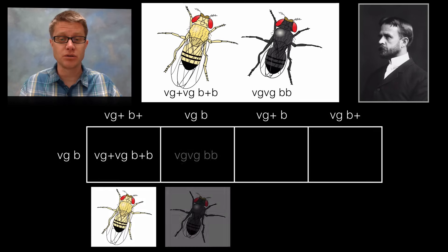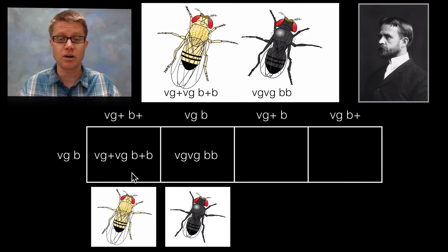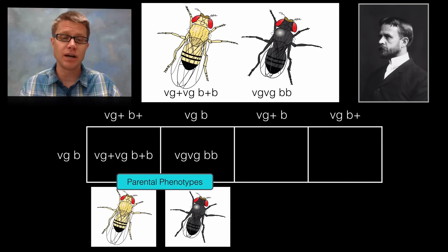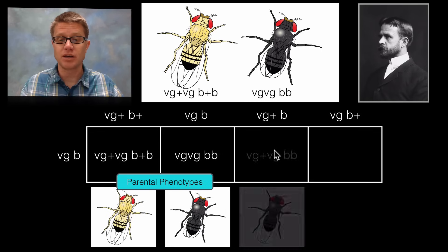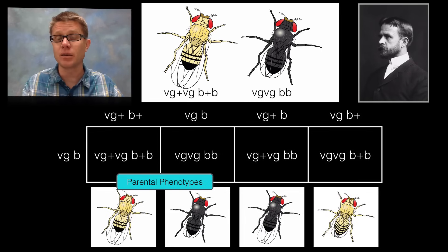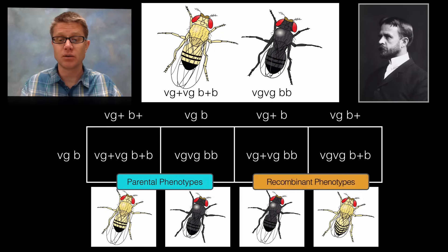And those first two are going to look like that, and we call those the parental phenotypes. Why is that? Because this one looks like that parent and this one looks like that parent. In other words there is no recombination. But on these other two alternatives what we are getting is a recombination of those parents, and so we call these simply the recombinant phenotypes.